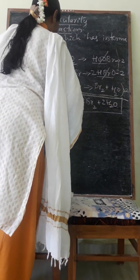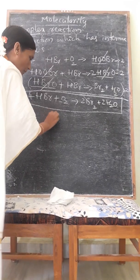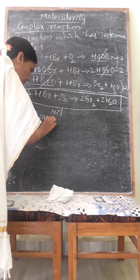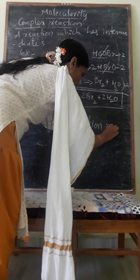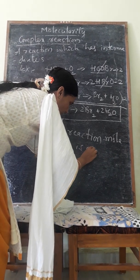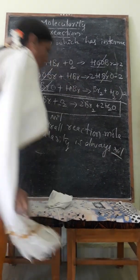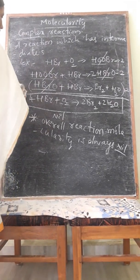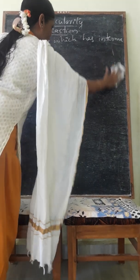Again, the molecularity of the first step before multiplying is 2. What is the overall molecularity of the overall reaction? It is nil — it has no meaning. Always remember: for complex reactions, the overall reaction molecularity is always nil or has no meaning. Therefore, the step that is the rate-determining step determines order and molecularity, and that step is called the rate-determining step or slow step.